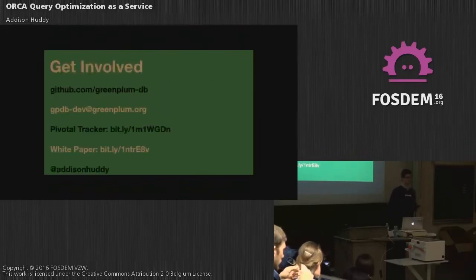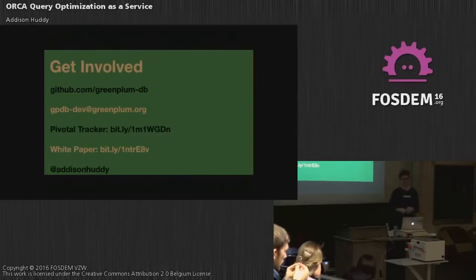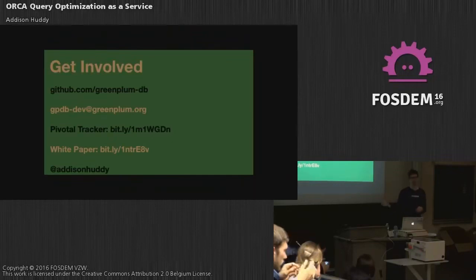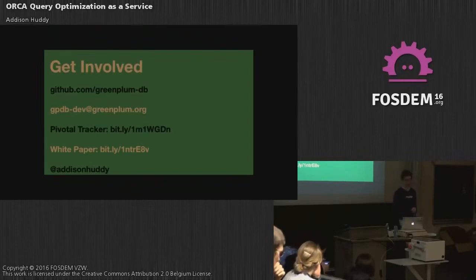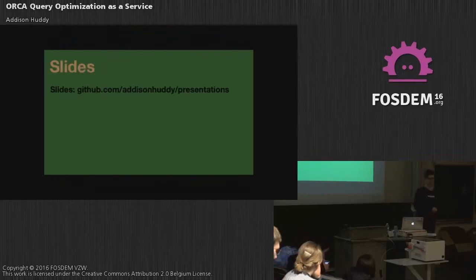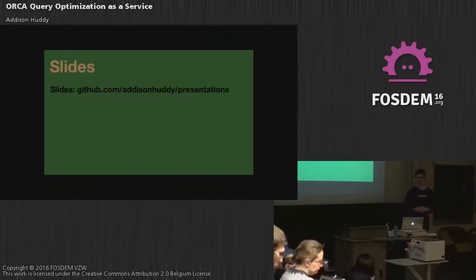If you want to start working on Orca, there are some low-hanging fruit items: there's no clear distinction today between physical and logical operators in the output; and there's boolean expression evaluation inside Orca — currently the parser handles that. We kind of live in the Greenplum project but are used in other databases. The community isn't that big yet. Talk about it on the dev mailing list. We have a public Pivotal Tracker to track all our work — you can get in there, comment, see what we're working on. There's also a white paper if you want more details, and you can tweet at me. Those are the slides — go there to get them.